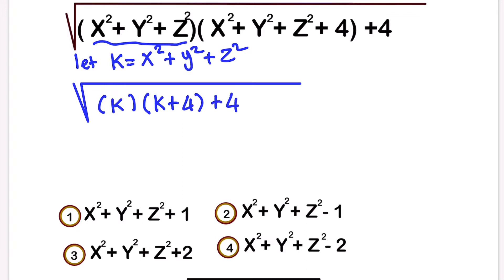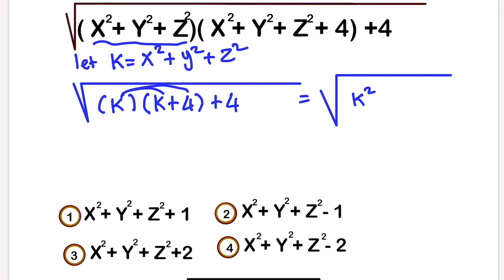So we can all see that this is a quadratic expression. If we open the bracket, we are going to have k squared plus 4k plus four. So we can see that this is a quadratic expression that can be factorized.